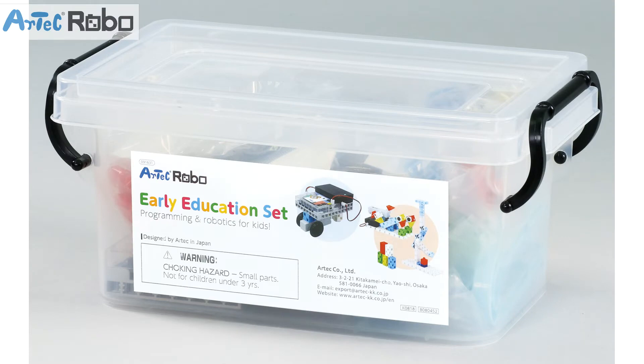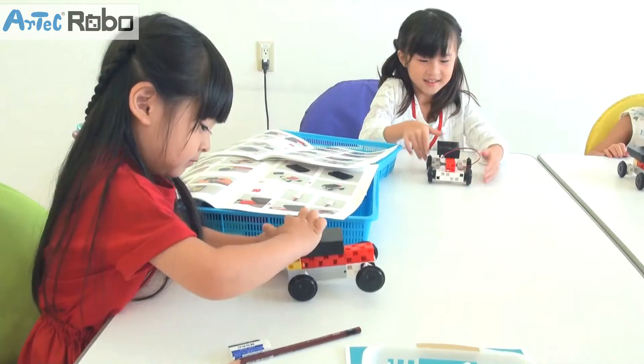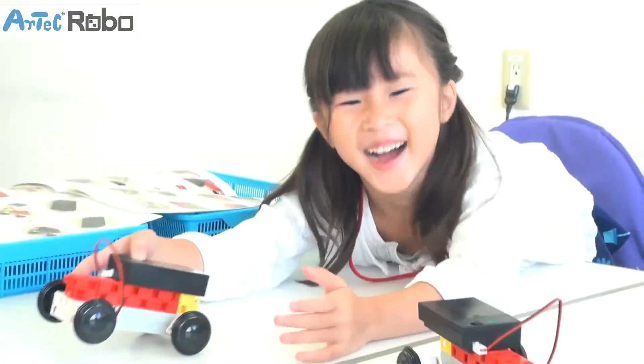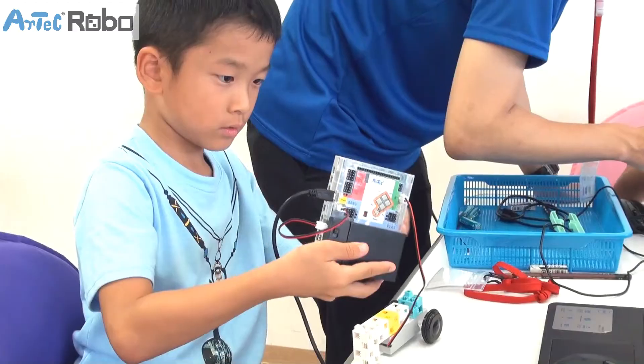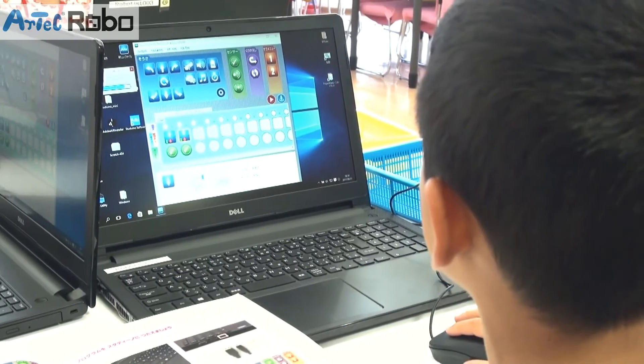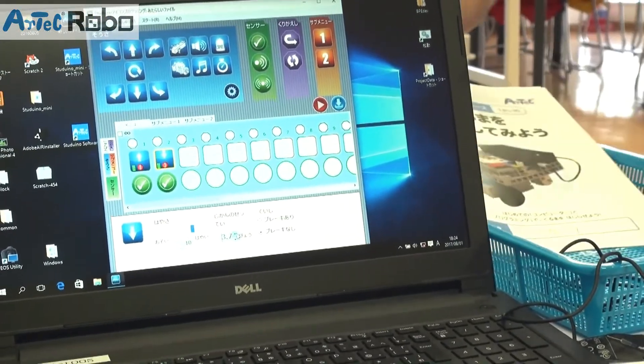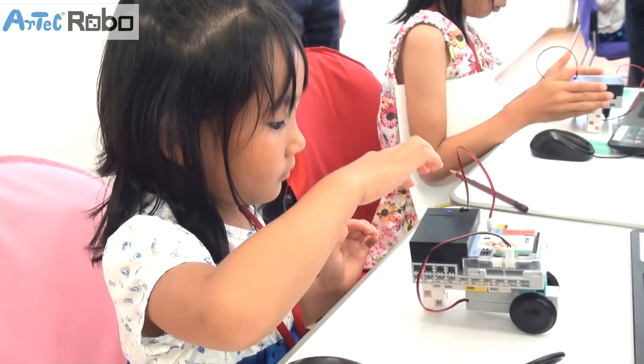Early Education Set is Artec's unique robotics and programming solution that was developed by Artec specifically for children in kindergartens and early primary school grades. This is a complete package for those who would like to start introducing mechanics, robotics, and programming to young learners.